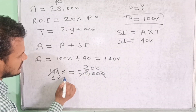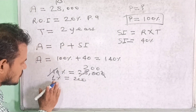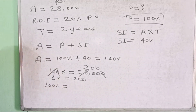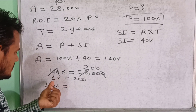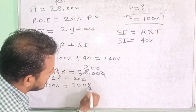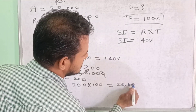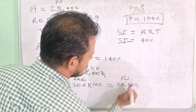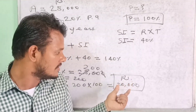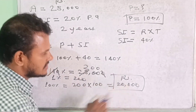14 goes into 28 giving 2, with another zero here — so 1% is equal to Rs. 200. We need to know what is 100%. Multiplying both sides by 100: 100% is equal to Rs. 20,000. Since the principal is always 100%, the principal is Rs. 20,000.